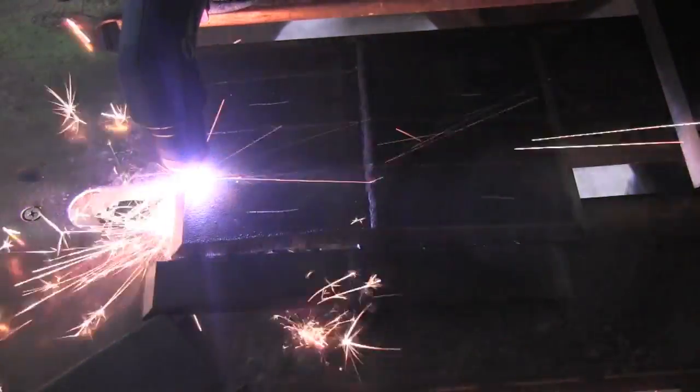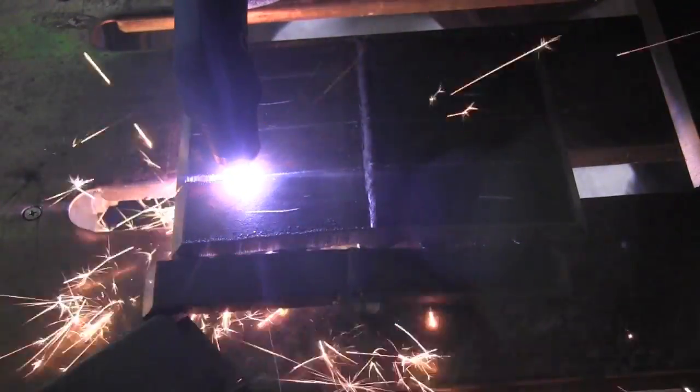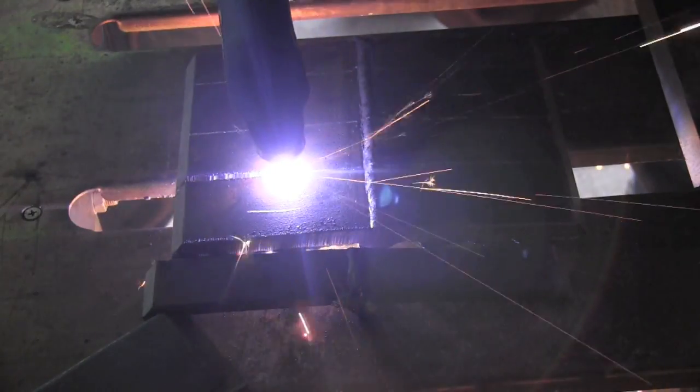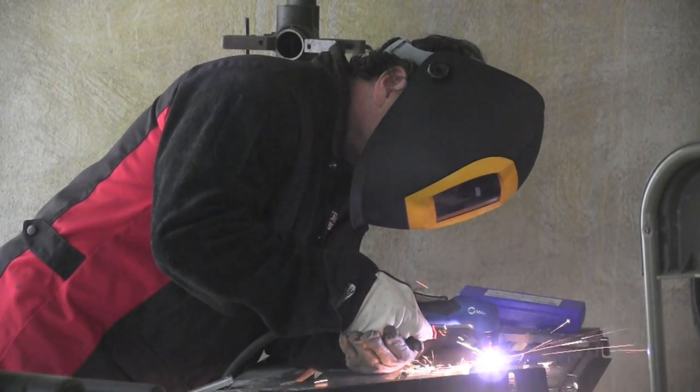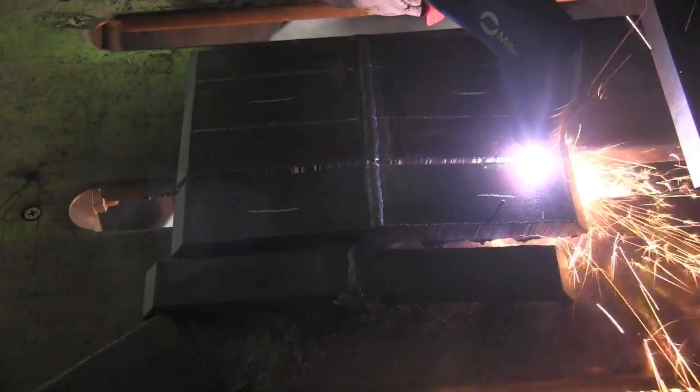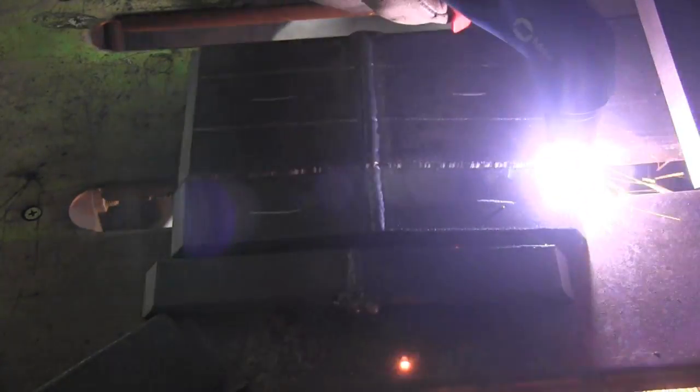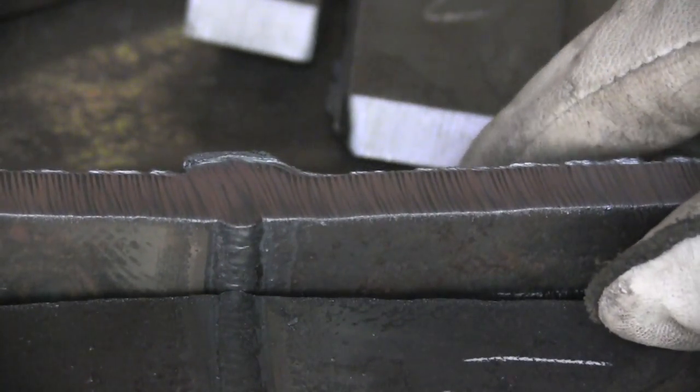Got a little Miller Spectrum 625 Extreme Plasma Cutter here and it makes short work of this 3/8ths plate. This is real time, not sped up here at all. Watch how fast this goes right here. It just cuts through it like butter. I got a brand new tip, brand new orifice and got plenty of air pressure and dry air. That's what makes all the difference with plasma cutting.